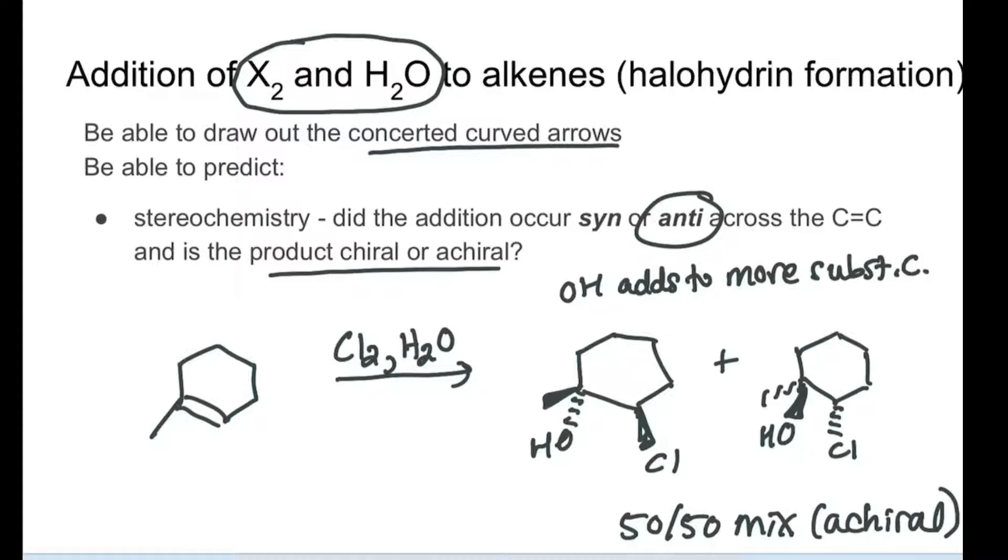More simple examples of predicting products for this reaction - the product is called a halohydrin. Let's say we have bromine and water. What we would expect is to have OH on the more substituted side, bromine on the less substituted side, and the opposite stereochemistry. The enantiomer will also form.